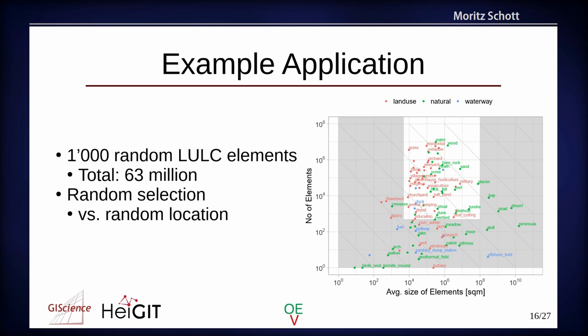We use 1,000 elements — in total there were 63 million, so it's only a very small set. Selecting these elements is not as straightforward as you would think. We chose random elements, but as you can see from the graph, this highly influences what data you get — you'll get a lot of objects for very common tags like natural=water, so you'll get a lot of lakes. There's another dimension to randomness: random location, which will favor larger elements more. We chose to look at one dimension first and will look into the other dimension in the future.